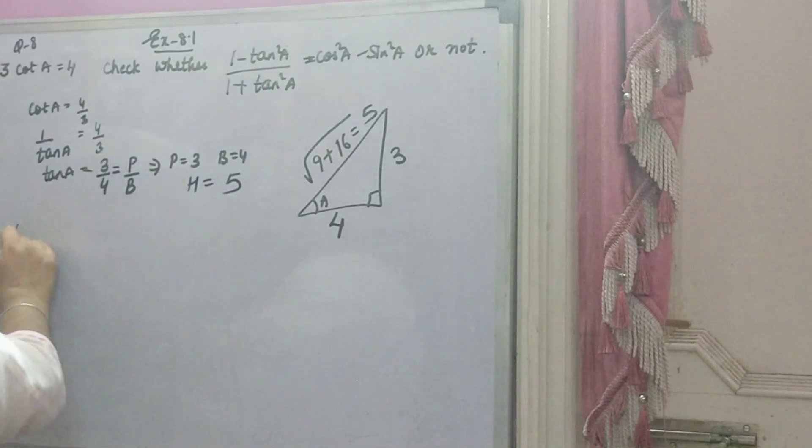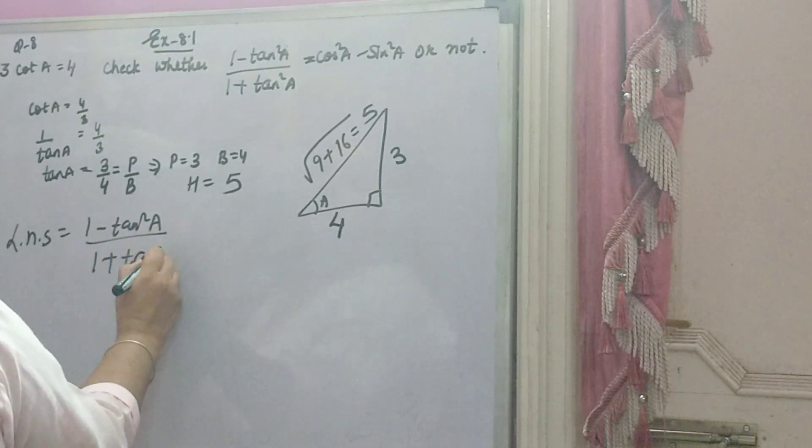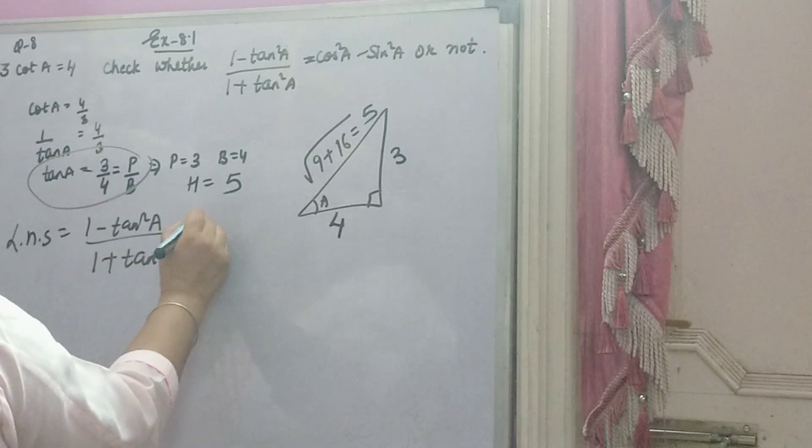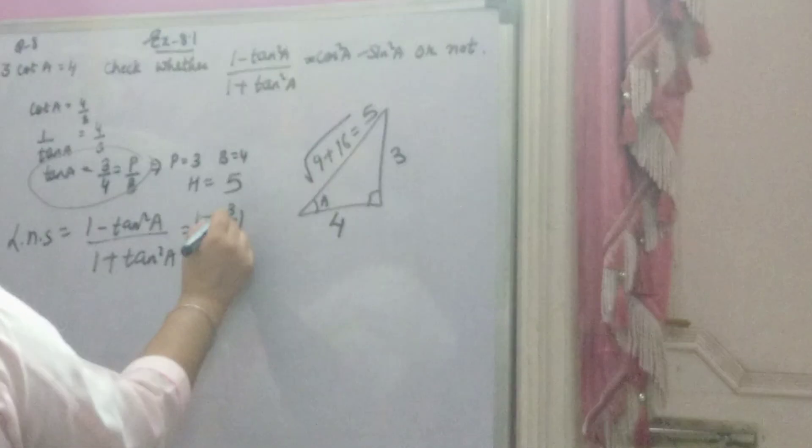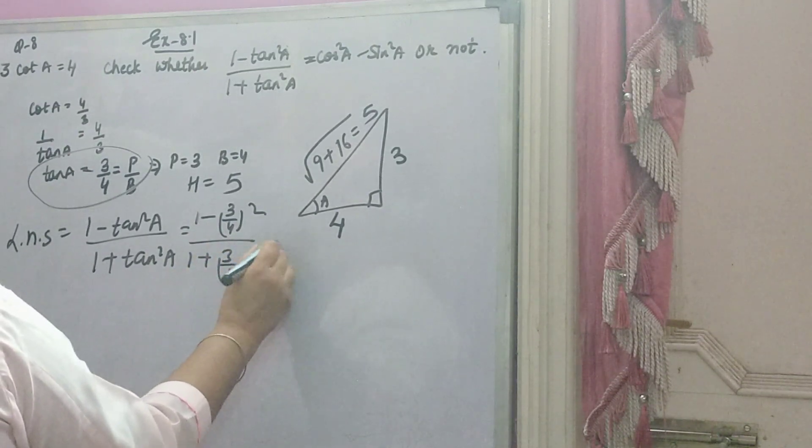Ab, left hand side shuru kare gai. Left hand side hai 1 minus tan²A over 1 plus tan²A. Aap ko ye batana hai ye dhono equal aate hai ke nai. Simply value substitute karo. Tan A ki 3 by 4. Yidhar agi 3 by 4 ka square, niche bhi 1 plus 3 by 4 ka square.